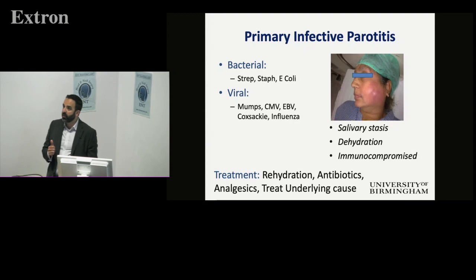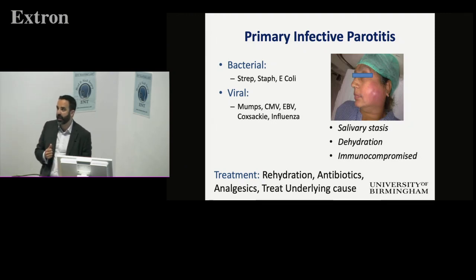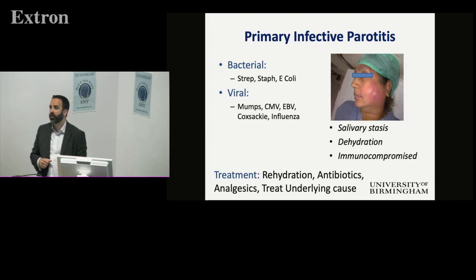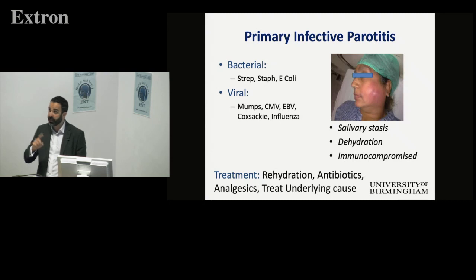What do we do to treat it? Fluids — always make sure they have fluids. Give them antibiotics, because most of these, even if they started as viral, have cycled into bacterial infection. Try to find out what underlying causes are present. Are they diabetic and immunosuppressed? Don't be afraid to ask for strict diabetic control when seeing these patients. There's a real role in all deep neck space and head and neck infections for strict glycaemic control during acute management, because that really does make a difference.